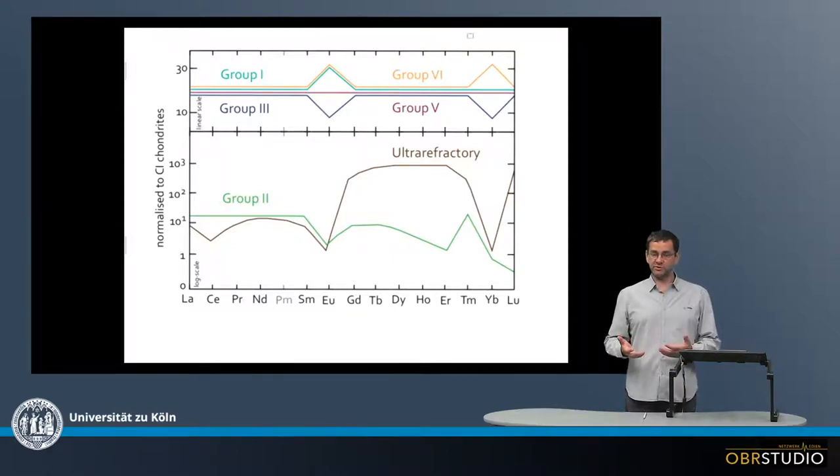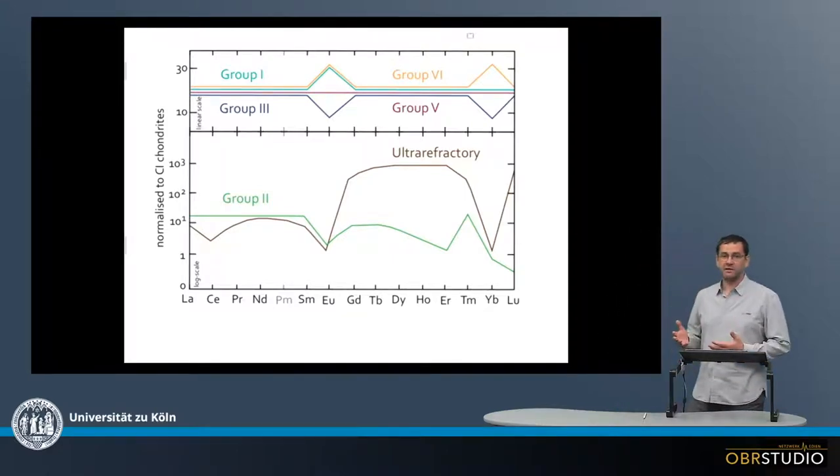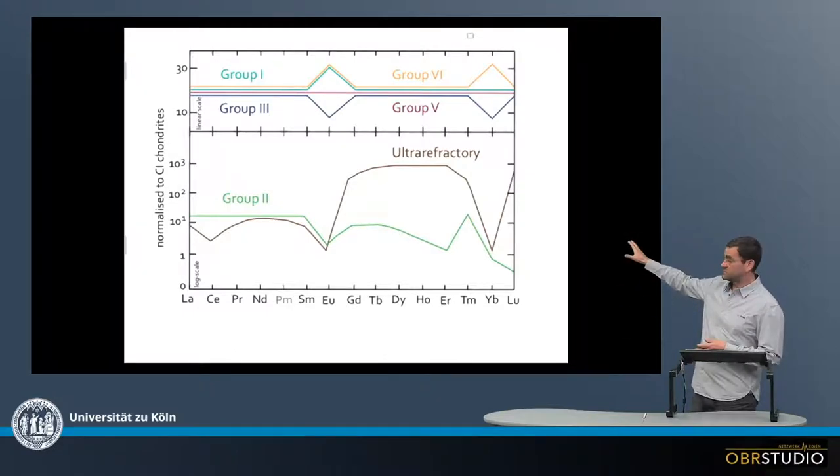One way to classify the calcium-aluminum-rich inclusions, the CAIs, is by looking at their rare earth element patterns, as is shown here.